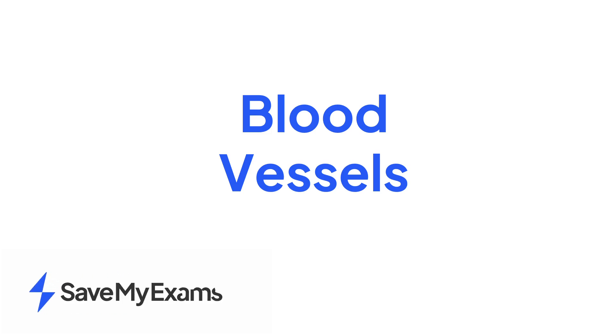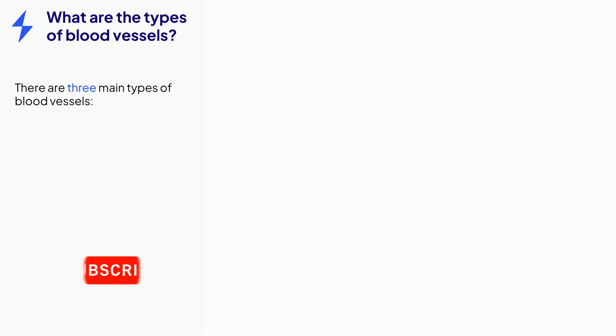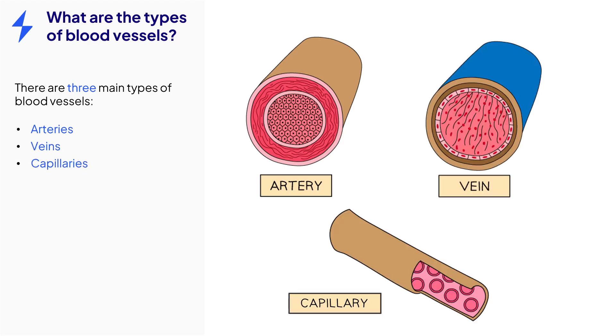This video is on the topic of blood vessels. Firstly, let's name the three main types of blood vessels you need to be aware of. They are arteries, veins, and capillaries. You do need to make sure that you know about the structure of each of these vessels, so let's go through them now.